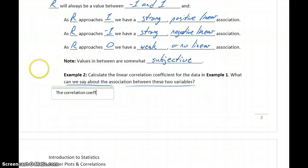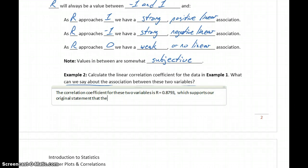So the correlation coefficient for these two variables is r equals 0.8793, depending on where we round that off, which supports our original statement, that there is a fairly strong positive, since again in this case that value is getting closer to positive 1, so a fairly strong positive linear association.